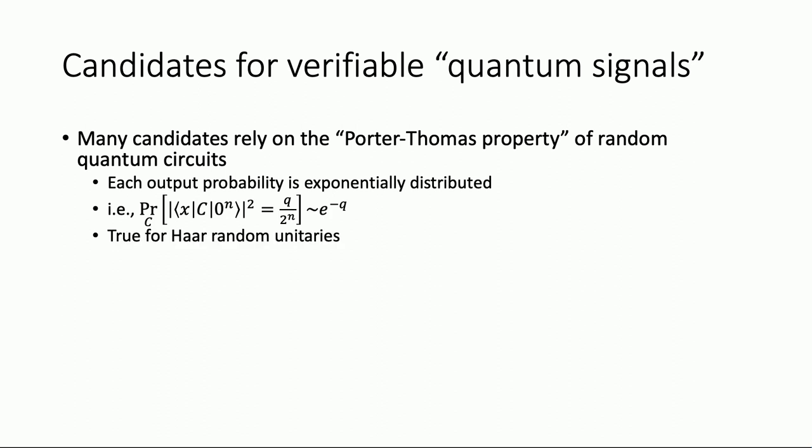Where did this come from? This is actually a little subtle. It's true for Haar random unitaries. Suppose you take a truly Haar random N-qubit unitary — not a circuit, but a 2^N by 2^N matrix — and ask what is the distribution of each entry of that matrix. This is well known in the random matrix theory community: it's Gaussian. The right analogy is that the amplitude is Gaussian, and the probability is roughly a squared Gaussian distribution — that's what we're getting at here.